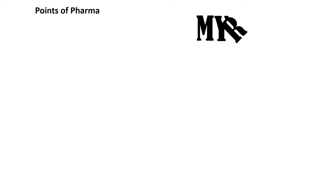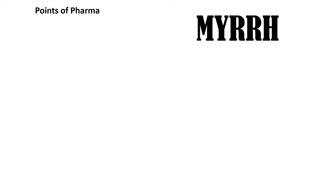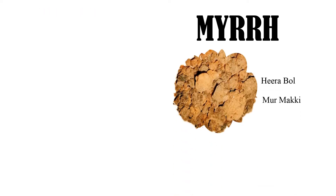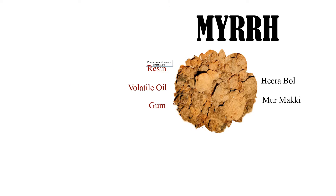Hello everyone, welcome to Points of Pharma. Today the topic is Myrrh. It is called Herabol and Murmaki. Myrrh is an oleogum resin, meaning the resin is found associated with volatile oil and gum.